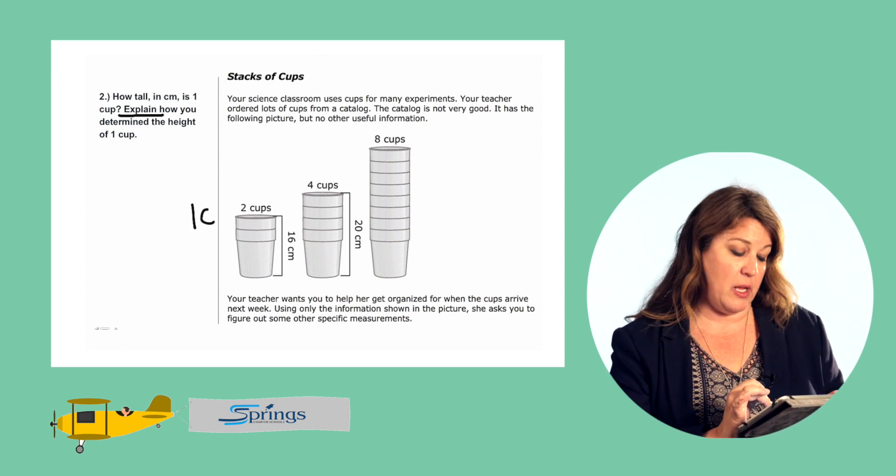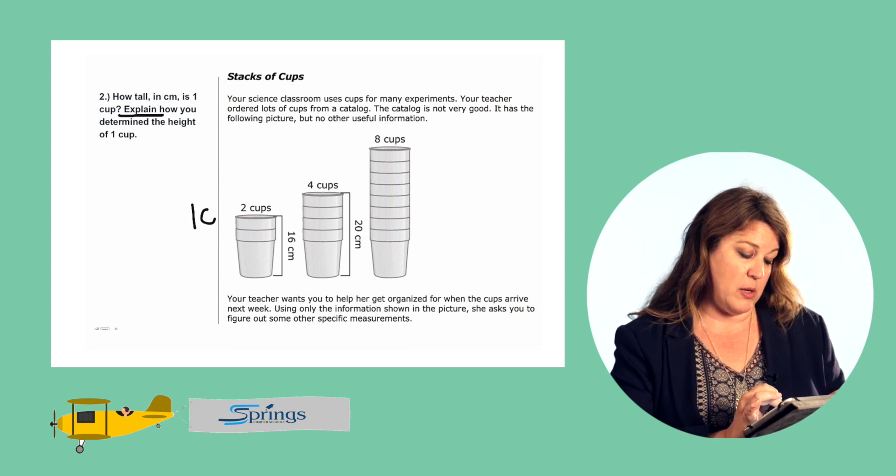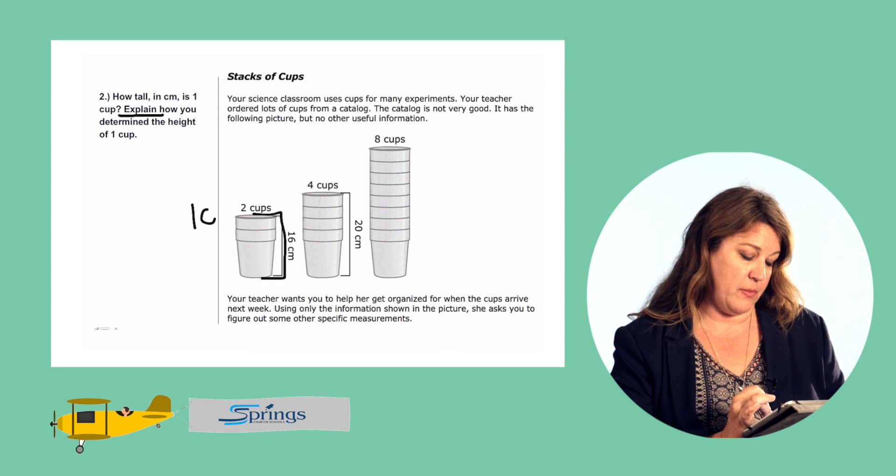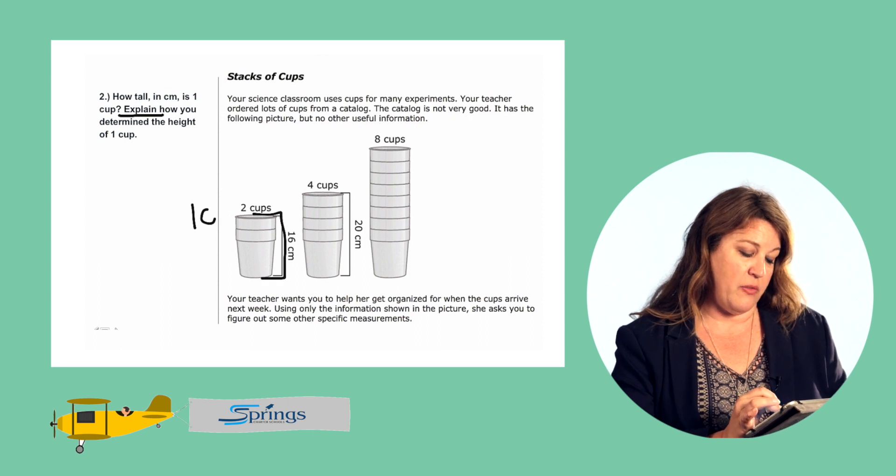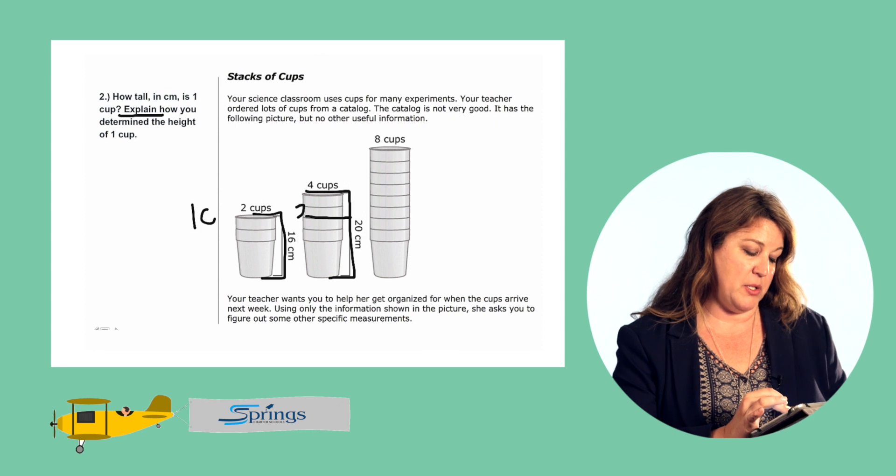Let's review what we did on the last problem. We have two cups. We can see here that the height is equal to 16 centimeters and the height of four cups is equal to 20 centimeters. There was a difference of four and so we know that the lip of each cup is equal to two.